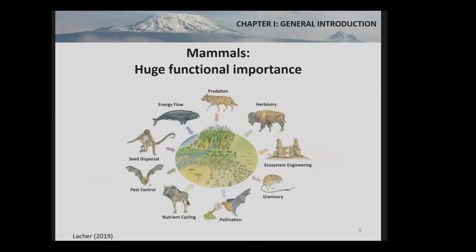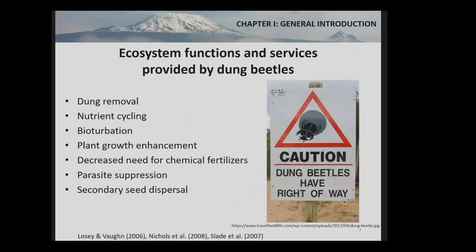Mammals are of huge functional importance in ecosystems, and they provide ecosystem services such as seed dispersal, pollination; they're central for nutrient cycling and energy flow, and they're also important for the maintenance of habitat heterogeneity through herbivory. Dung beetles are closely linked to mammals since they are strictly coprophagous — they feed on the microorganism-rich liquid component of mammalian dung, and use the more fibrous material to brood their larvae. Through their feeding and nesting behaviors, dung beetles contribute to a suite of important ecosystem functions and services.